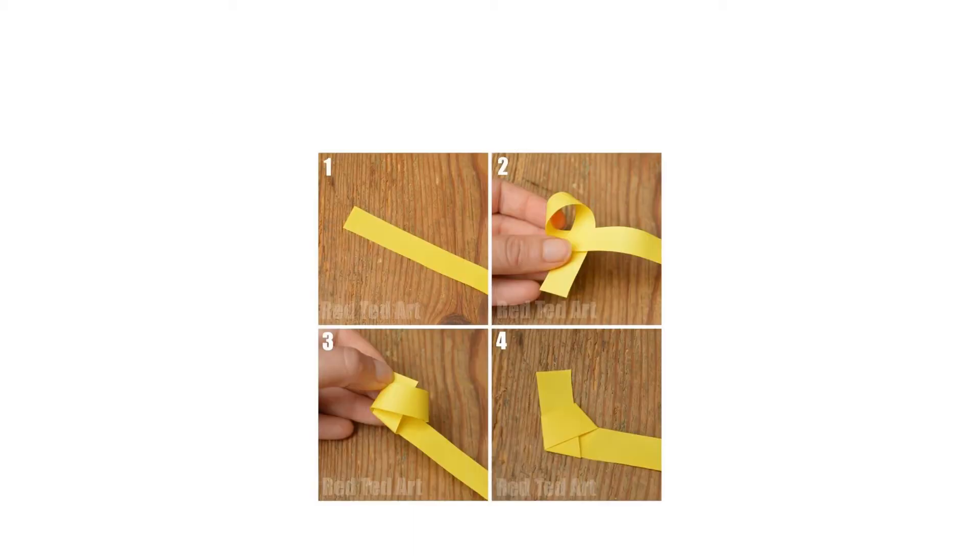The first thing you need to make your origami lucky stars is a strip of paper. I cut mine 1cm straight off an A4 sheet of paper.